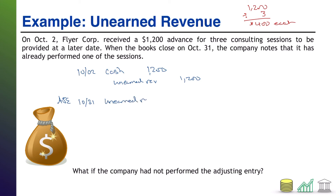The adjusting journal entry reduces our liability by $400, because we have already performed that session. Therefore, it's not a liability anymore. And we record service revenue for $400. We have now earned $400 of the $1,200 that we promised. That's your adjusting journal entry.